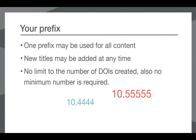The prefix we send you may be used for all of the content that you have. A common question is whether you need a new prefix for every journal you publish — you don't. You can add new titles or journals under the prefix we've given you at any time without needing to tell us. There are also no limits to the number of DOIs you register, and there's no minimum either. Some members only deposit five or ten DOIs per year, and that's absolutely fine.